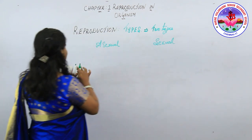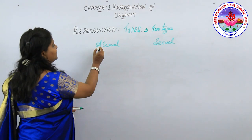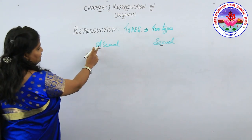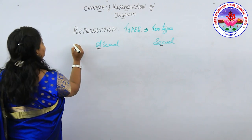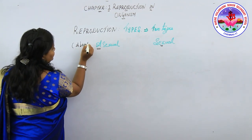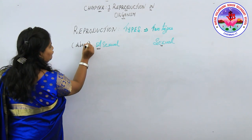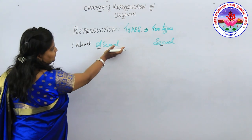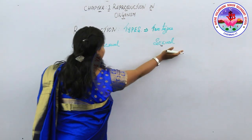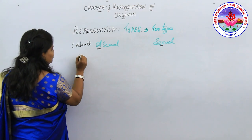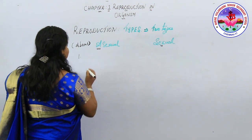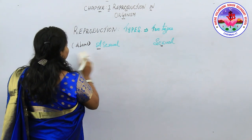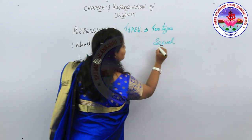There are two types of reproduction: asexual and sexual. In asexual reproduction, the 'a' refers to absent — so there is an absence of sex. There is no involvement of male and female gametes. In sexual reproduction, young ones are formed by the formation of gametes.